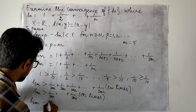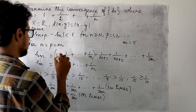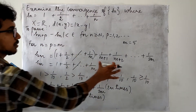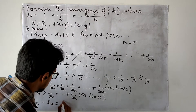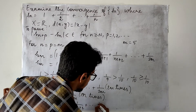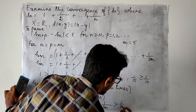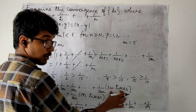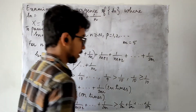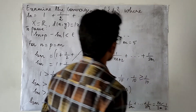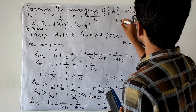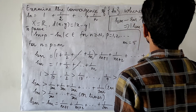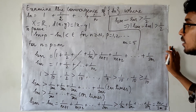Let me calculate S(2m) minus Sm. The terms in Sm will get cancelled when we make the difference, so what remains is 1/(m+1) + 1/(m+2) + ... + 1/(2m). This can be bounded below: each term is bigger than 1/(2m), and there are m such terms. So it is m times 1/(2m), which equals 1/2. Therefore S(2m) minus Sm is bigger than 1/2, and taking absolute value, |S(2m) minus Sm| > 1/2.